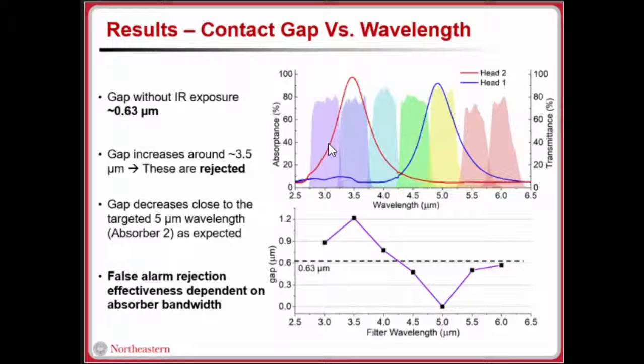Shown here is the absorption spectra of the absorbers again along with the transmission spectra of all the filters that we use. We use filters from 3 to 6 micron, each with a bandwidth of around 500 nanometers. As we expose it to wavelengths closer to the rejection wavelength, you can see that we calculated a contact gap increase. The gap before IR exposure without any exposure to IR, we calculated it to be 0.63 micron.